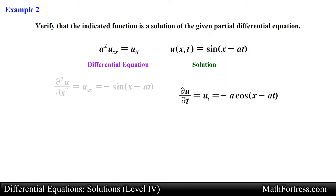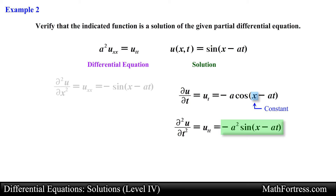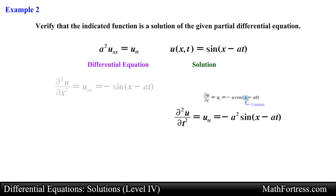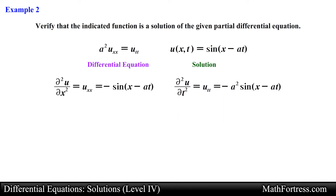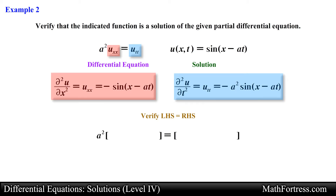Then we take the partial derivative of u with respect to t once again, making sure we keep the variable x constant. Carrying out the partial derivative, we obtain the following expression. Having found the second partial derivatives, we proceed with the substitution step, replacing the second partial derivatives to obtain the following expression.